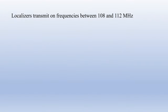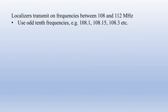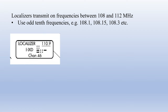Localizers transmit on frequencies between 108 and 112 MHz, the same as the lower end of the VOR frequency range. Frequencies with odd tenth decimal places like 108.1, 108.15, and 108.3 are reserved for localizer transmitters. Localizers also broadcast an ID signal like VOR, and all localizer identifiers will be four letters starting with the letter I. Like VORs, localizers can also be equipped with DME, which you can identify if the nav data box has a channel frequency on FAA charts.